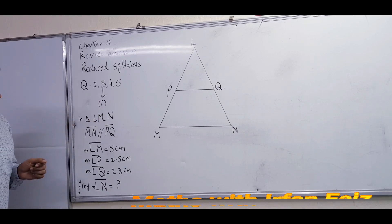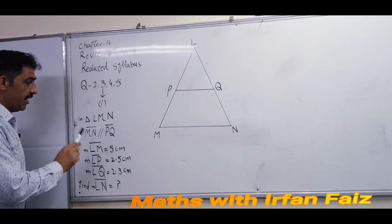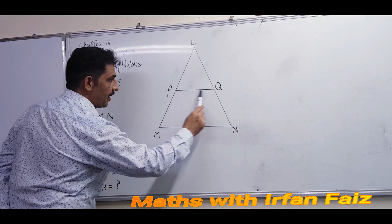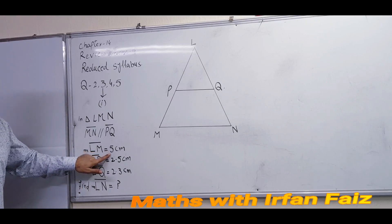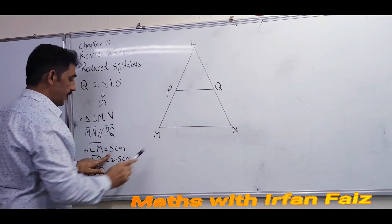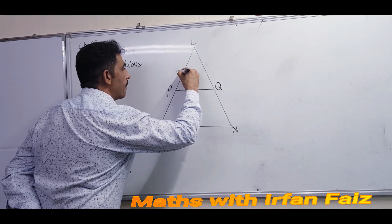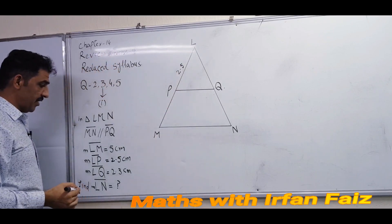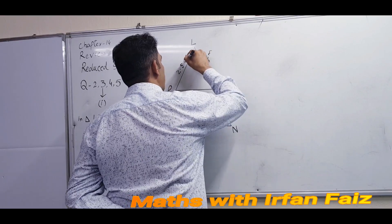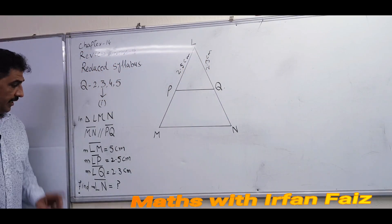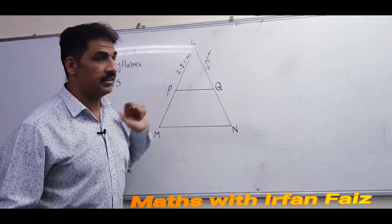The diagram already shown on the board: LMN is a triangle where MN is parallel to PQ. Three lengths are given and we need to find the fourth. LM is equal to 5 centimeters, LP is equal to 2.5 centimeters, LQ is equal to 2.3 centimeters, and we are asked to find the length of LN.